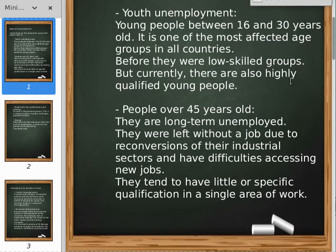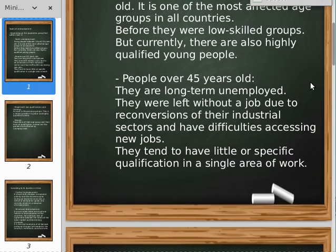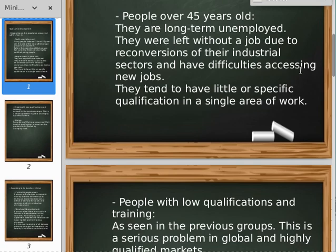The second group is people over 45 years old. They tend to experience long-term unemployment — they were left without a job due to reconversion of the industrial sector and had very great difficulties accessing new jobs. They tend to have little specific qualifications in a single area of work.